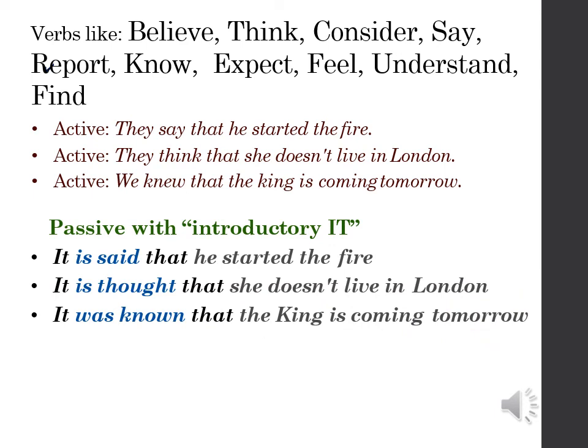A common way of reporting what is said by people in general or by an unspecified group is to use 'it' as an impersonal passive with a 'that' clause. For this we use verbs like believe, think, consider, say, report, know, expect, feel, understand, find. For example: 'They say that he started the fire' → 'It is said that he started the fire.' 'They think that she doesn't live in London' → 'It is thought that she doesn't live in London.' 'We knew that the king is coming tomorrow' → 'It was known that the king is coming tomorrow.'